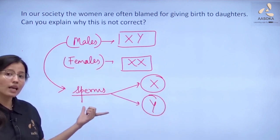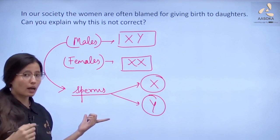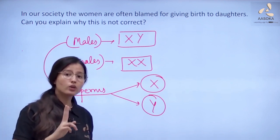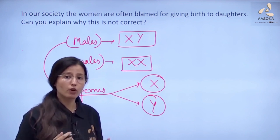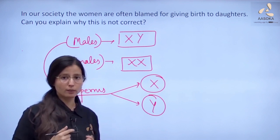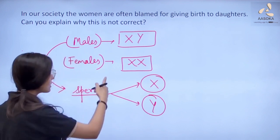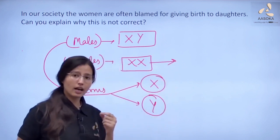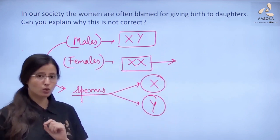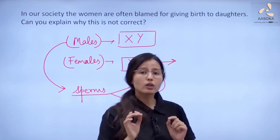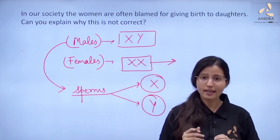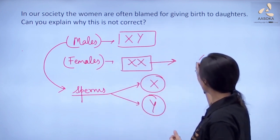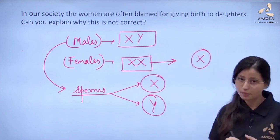We can see that males are heterogametic because in them there are two different types of gametes formed. But in females, as the female only has XX sex chromosomes, all the eggs produced in the female will only be of the X type.